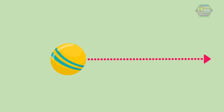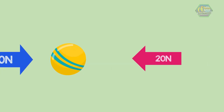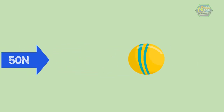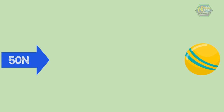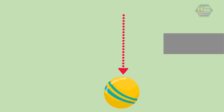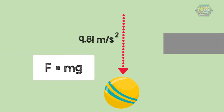Let's talk about when an object accelerates. When forces are unbalanced, the object is accelerating. The most common cause of an object moving is gravitational force. When an object falls downward, it accelerates at a rate of 9.81 meters per second squared. In our formula F equals MA, the force acting on a falling object is gravity, so the formula becomes F equals Mg, where G is the gravitational force.